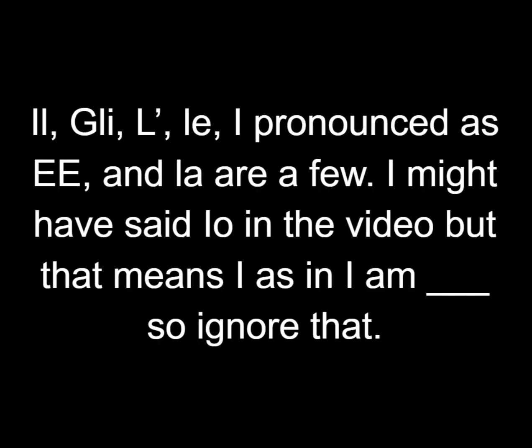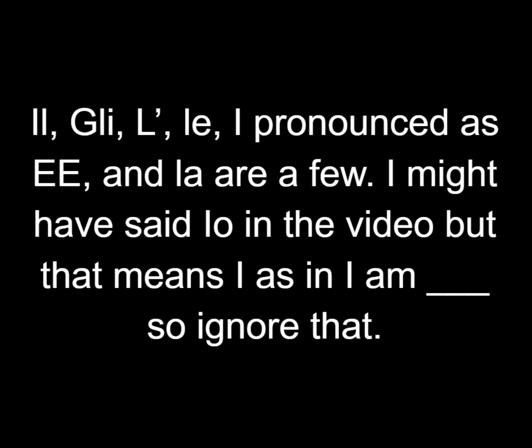Another thing this course did not explain to me is when to use the different words for 'the.' In case you didn't know, there are over seven different words for 'the' in the Italian language. These include il, gli, l' (with an apostrophe), le, i, la, and le. Each of these has different circumstances for when to use them — does the noun end with an O or an A? Is there a vowel as the first letter of the noun? Is the noun plural? I had to look up how all this works instead of Duolingo teaching me.